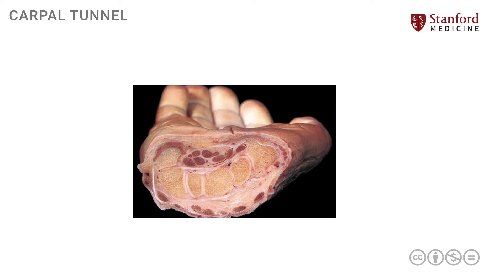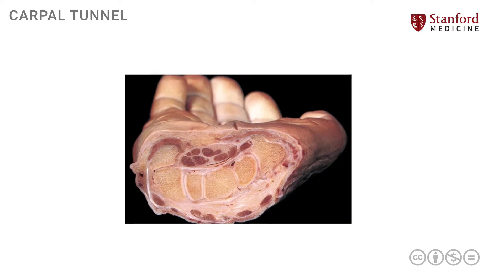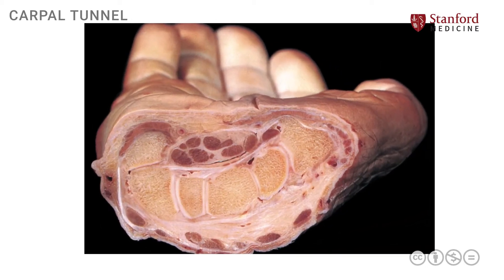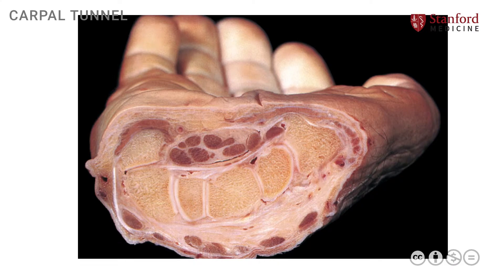Right hand with the carpal tunnel in cross section. The thumb or the radial side is over here, and then this is the medial side or the ulnar side. So this is the carpal tunnel, and we will look at a very simple depiction of this in a line drawing in order to really understand some of the anatomy.